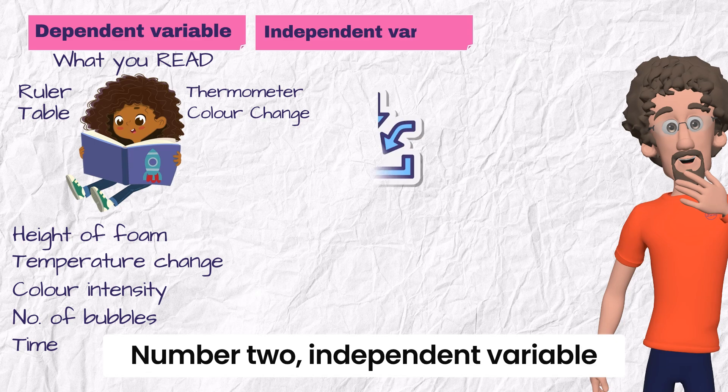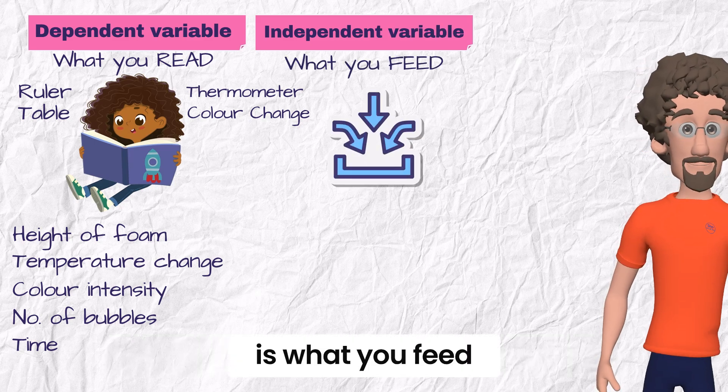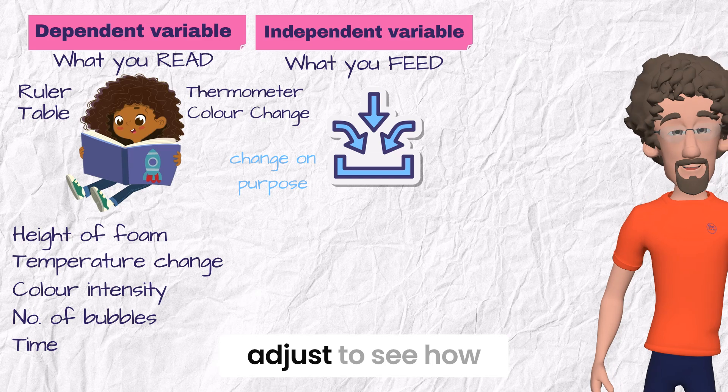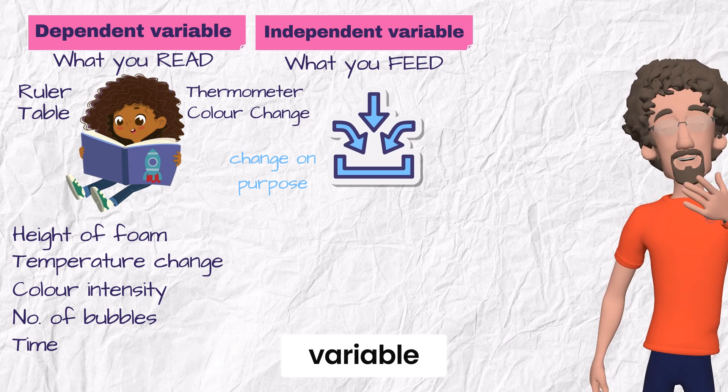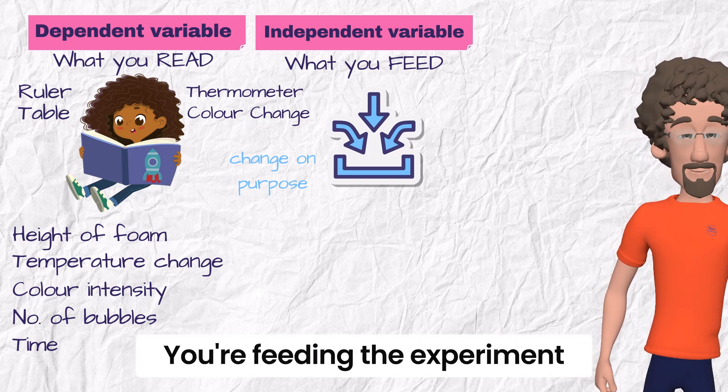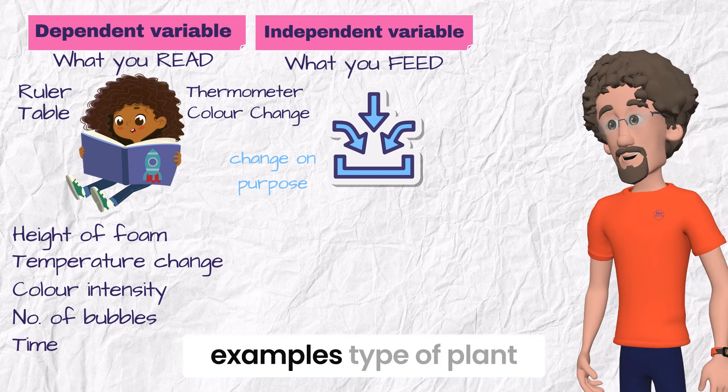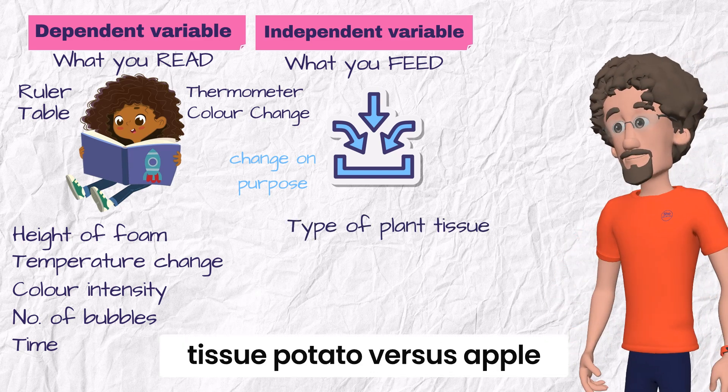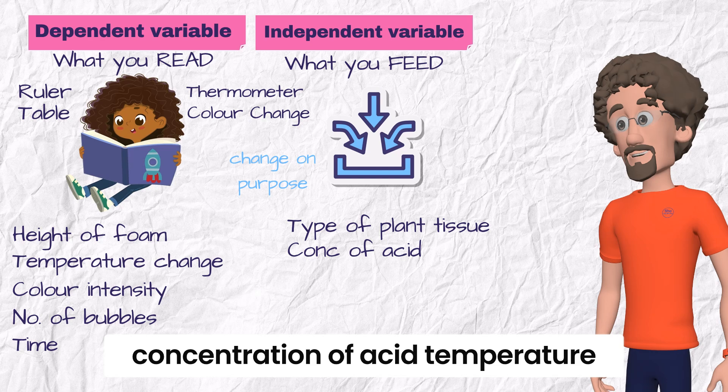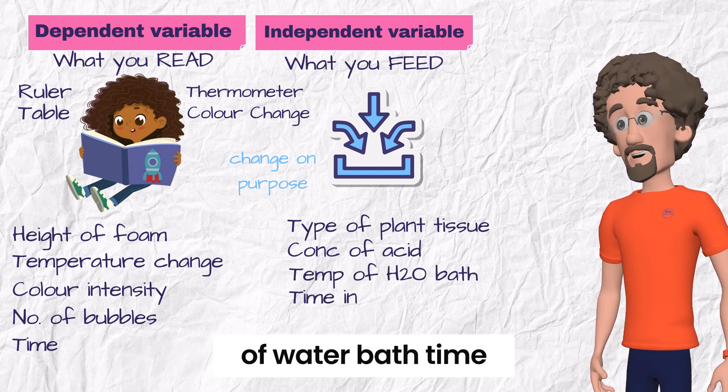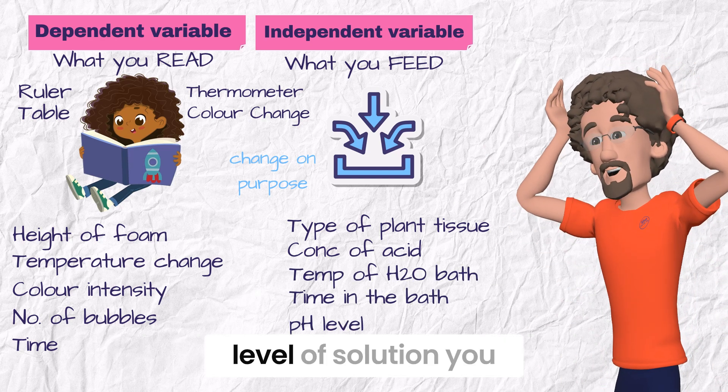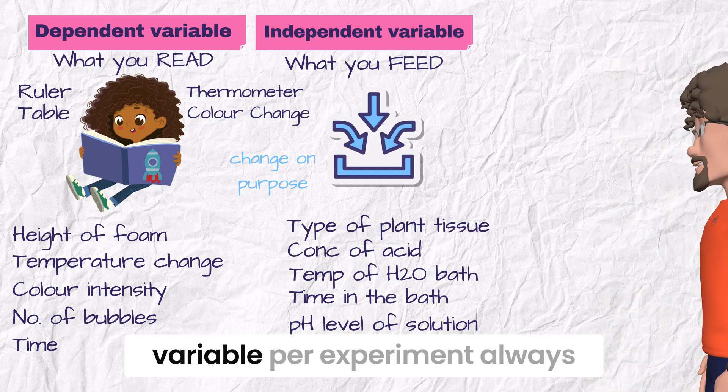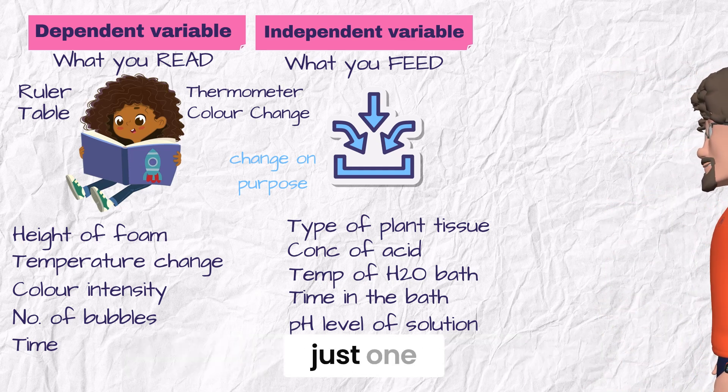Number two: independent variable is what you feed. This is the thing you change on purpose, the one variable you adjust to see how it affects the dependent variable. You're feeding the experiment this input. Examples: type of plant tissue (potato versus apple), concentration of acid, temperature of water bath, time in the bath, pH level of solution. You only change one independent variable per experiment. Always just one.